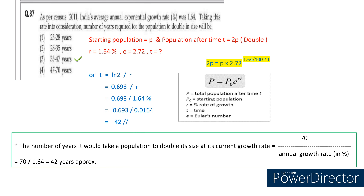There is one more question from demography in the December 2023 paper, a numerical question. As per Census 2011, India's average annual exponential growth rate was 1.64. Taking this rate into consideration, the number of years required for the population to double in size will be what? We have a standard formula: P is equal to P₀ into e power RT, where P is the total population after time T, P₀ is the starting population, R is the percentage rate of growth — here 1.64 — T is time to calculate, and e is Euler's number, the mathematical constant equal to 2.72.